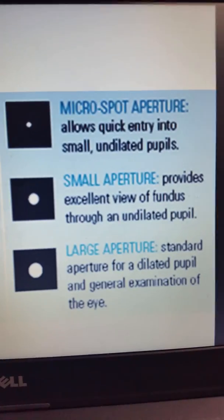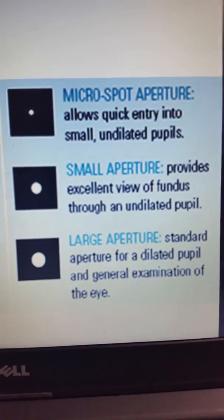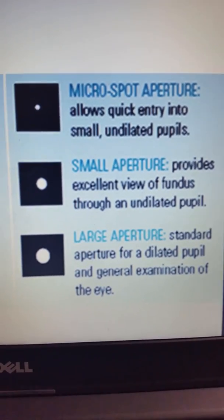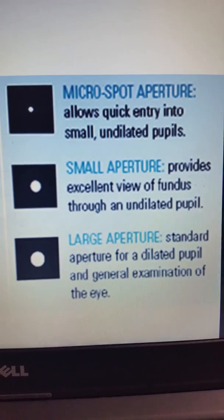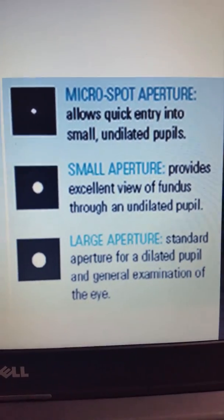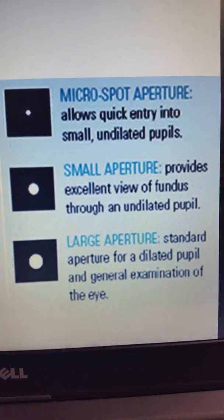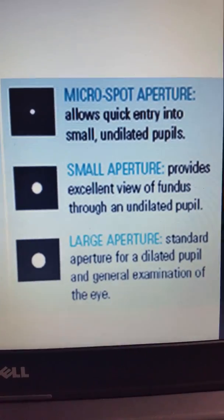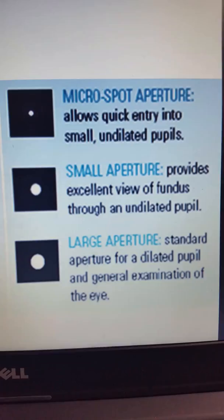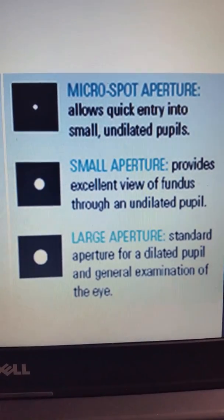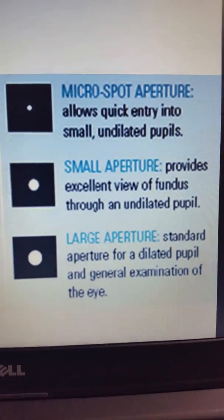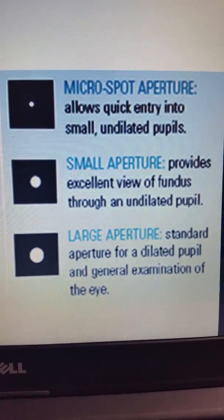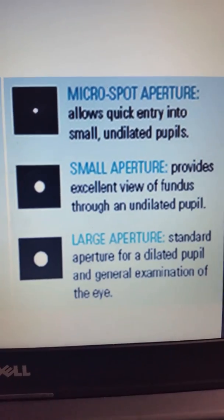The size of the aperture relates to the pupil condition: your micro spot aperture is for small undilated pupils, your small aperture is used on the majority of undilated eyes, and your large aperture is the standard for dilated pupils.